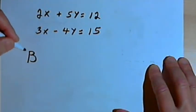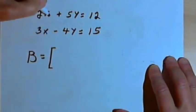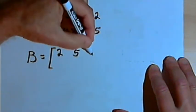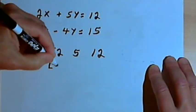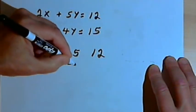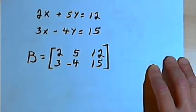So I'm going to make matrix B. Matrix B is going to have as its first row a 2, a 5, and a 12. And the second row will be a 3, a negative 4, and a 15.